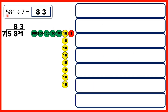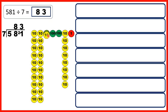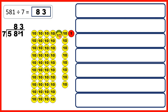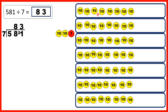Then we had 581, so that's 5 hundreds, 8 tens and 1 one. We can take the first two digits together because we can exchange each of our hundreds place value counters for 10 tens, and when we do that we get 58 tens altogether. We can then share out 56 of those tens, giving us 8 tens in each group — so 8 is the tens digit of our answer.